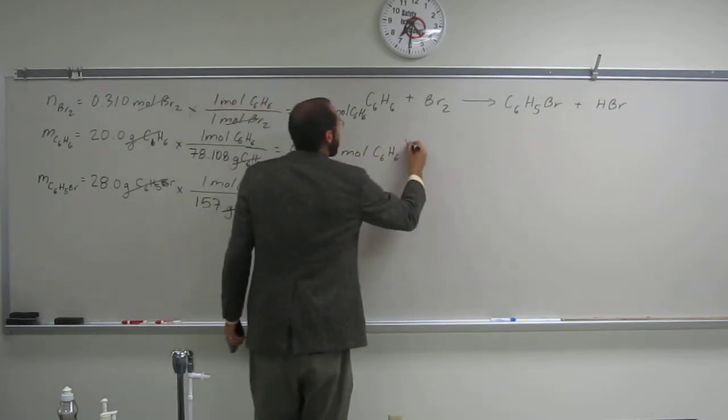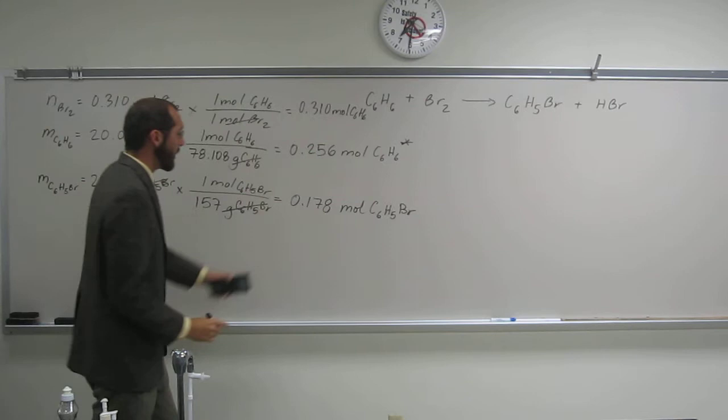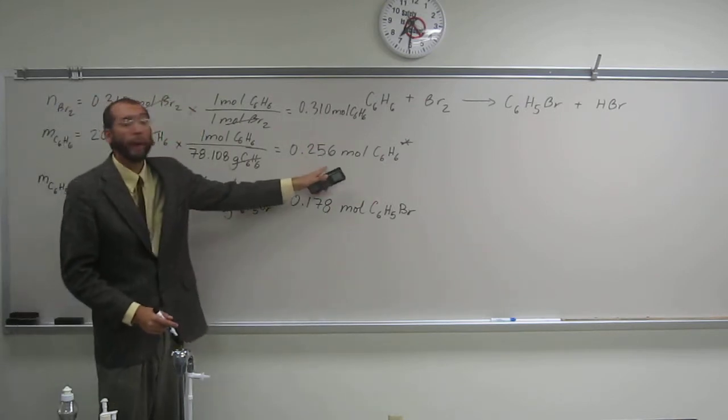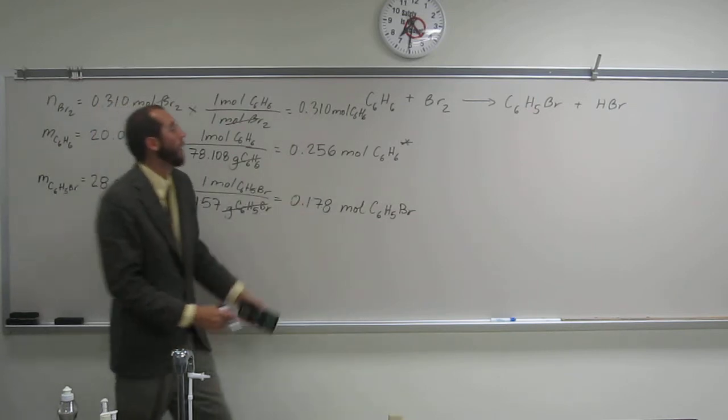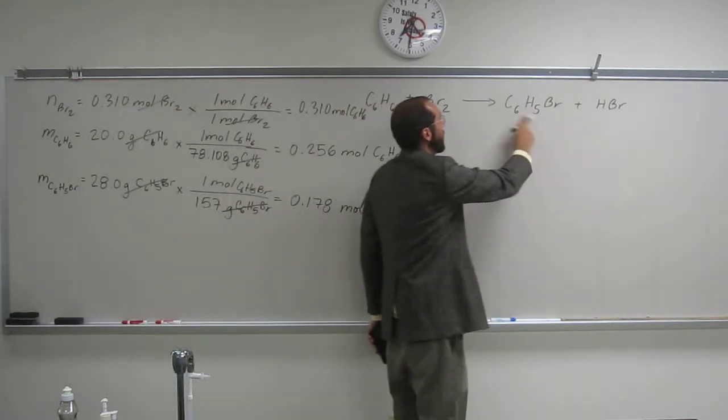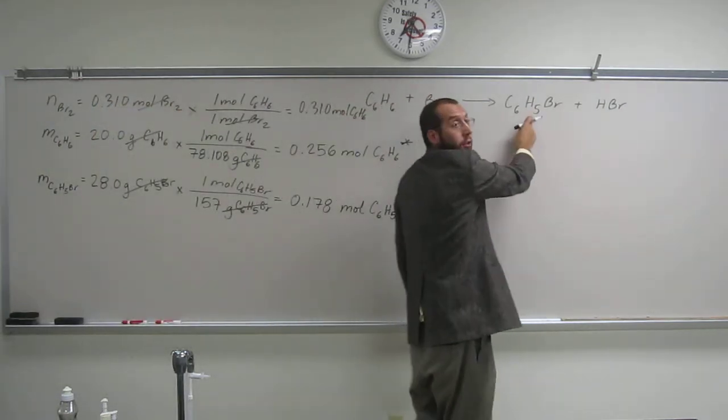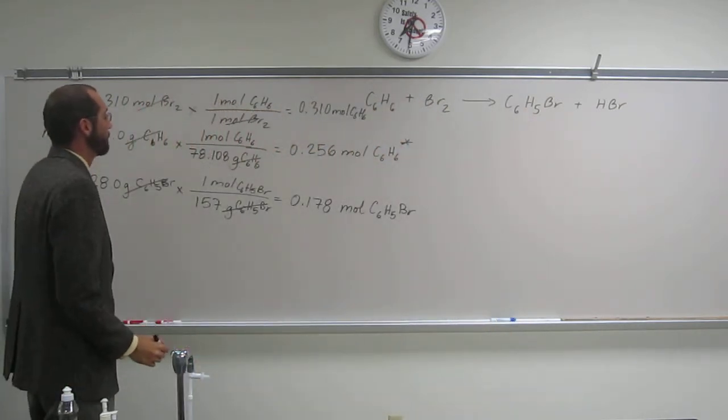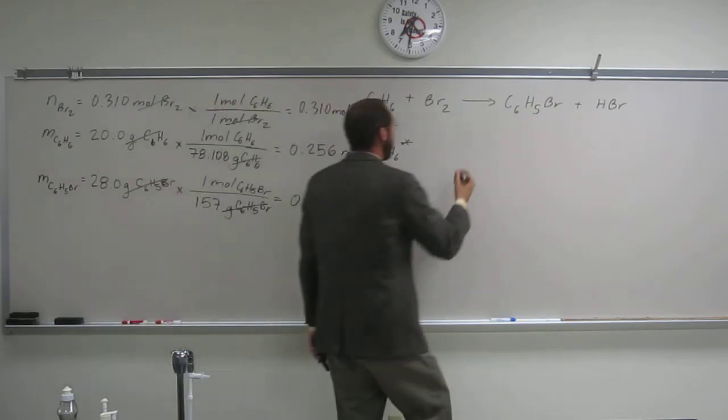Okay, so remember this was the limiting reagent, so we're going to compare this to that. Because this is the maximum amount that could have been made. Why? Because we have a one-to-one ratio of the limiting reagent to bromobenzene. Okay, so let's just do the problem then.